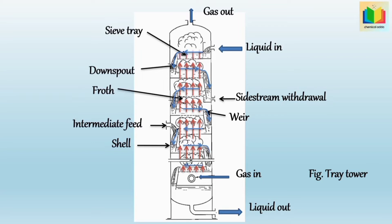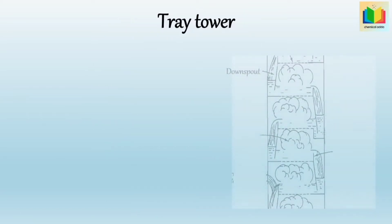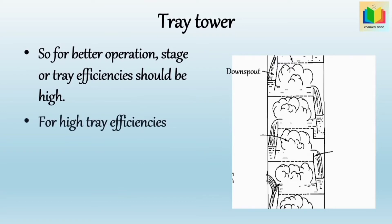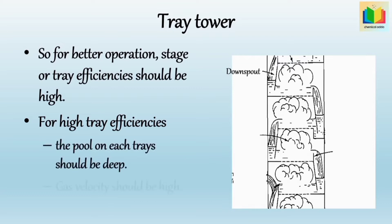On each tray, vapor and liquid are brought into intimate contact. For better operation, tray efficiencies should be high. For high tray efficiency, the pool of liquid on each tray should be deep so that bubbles of gas require a relatively long time to rise through the liquid. Also, gas velocity should be high, because when gas bubbles slowly through the openings on the tray the bubbles are large and the liquid is relatively quiescent, so much of it may pass over the tray without having contacted the gas.